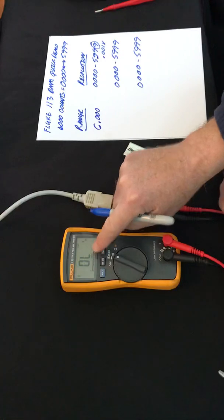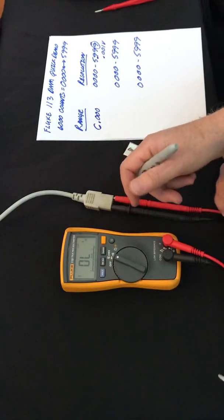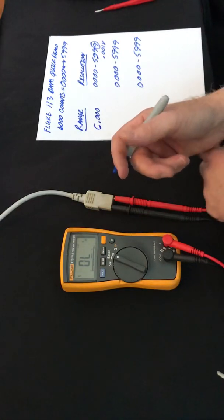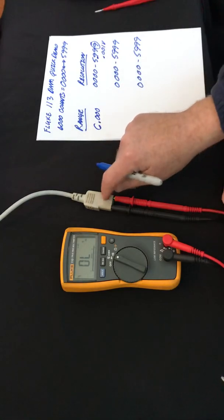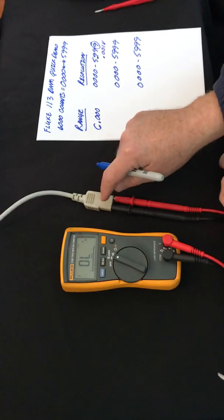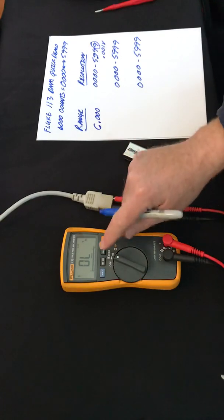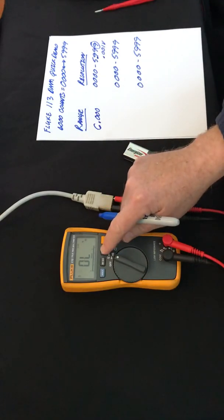Notice it says OL. Never interpret OL as open line. What OL means is that there's an overload - you're in too low a range. There's a voltage present on the leads, so just be careful and range up to find it if you're in manual range.